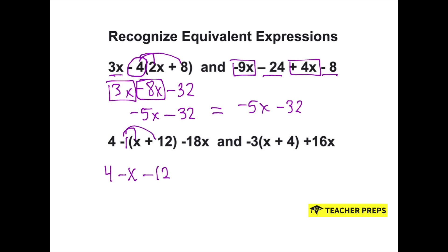We have the 4 to bring down and the minus 18x to bring down. Now we have a negative x that we can combine with a negative 18x. That gets us a negative 19x. And 4 minus 12 is negative 8.